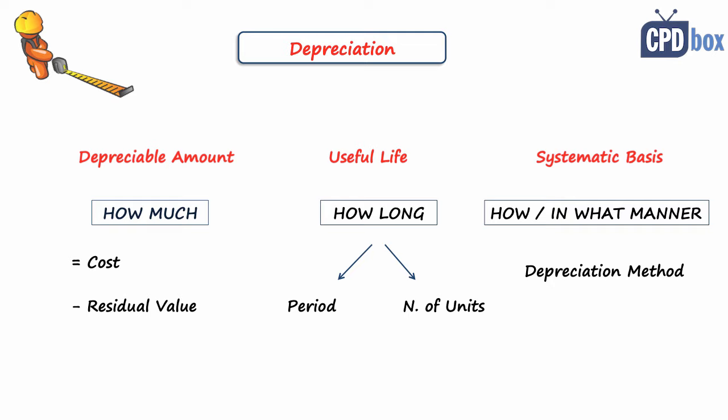Depreciation shall be recognized as debit expenses and credit property, plant and equipment. But sometimes when you use the asset for production of other assets, the depreciation is debited to the cost of another asset, like inventories. The last topic to cover in this video is the derecognition of property, plant and equipment.